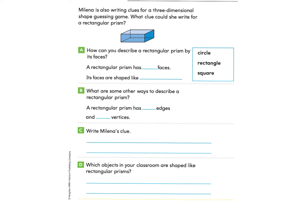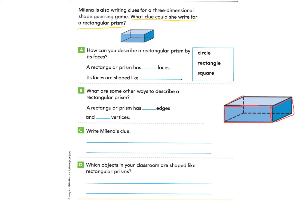Let's take a look at page 519. Milena is also writing clues for a three-dimensional shape guessing game. What clue could she write for this rectangular prism? Let's look at part A: How can you describe a rectangular prism by its faces? It has one here, one here, one on top — that's three — then one on the side, one in the back, and one on the bottom: a total of six faces. Every face is shaped like a rectangle, so we can write that in.